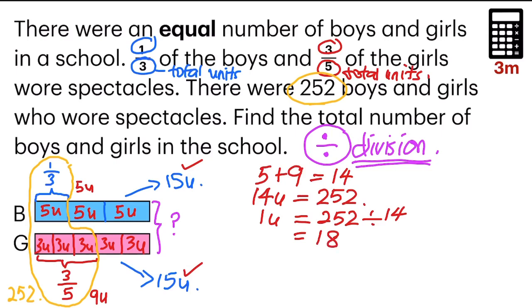The last step. Because there are 15 units of boys, and also 15 units of girls, that gives us 30 units. Which is the total units of boys and girls. So to find the total number, I will take 1 unit, which is 18, multiply by 30 units. And I will get the answer of 540. So there are 540 boys and girls.